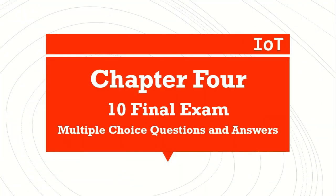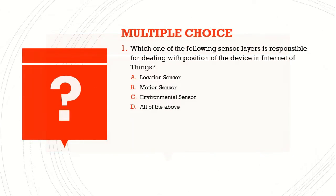Chapter 4: Internet of Things — multiple choice questions and answers that might help you with your final exams. Question number one: which one of the following sensor layer is responsible for dealing with the position of a device in Internet of Things? A) location sensor, B) motion sensor, C) environmental sensor, D) all of the above. The answer is A) location sensor.